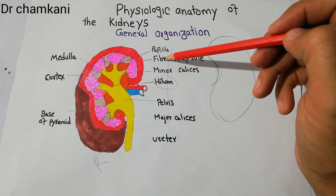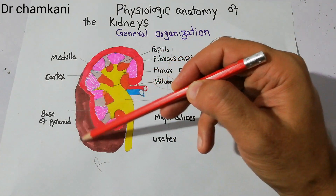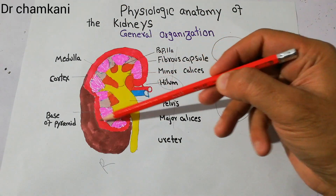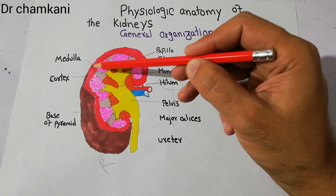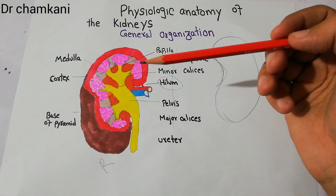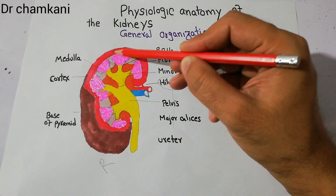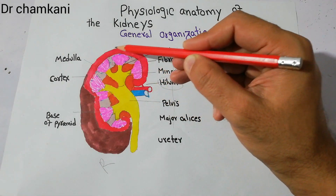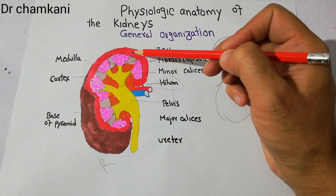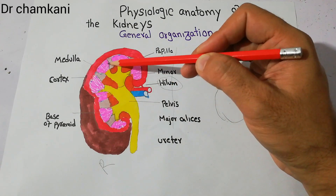Outside the kidney there is a fibrous capsule. If we cut this kidney longitudinally, we can see two major regions: the outer region is called the cortex, and the inner region is called the medulla.